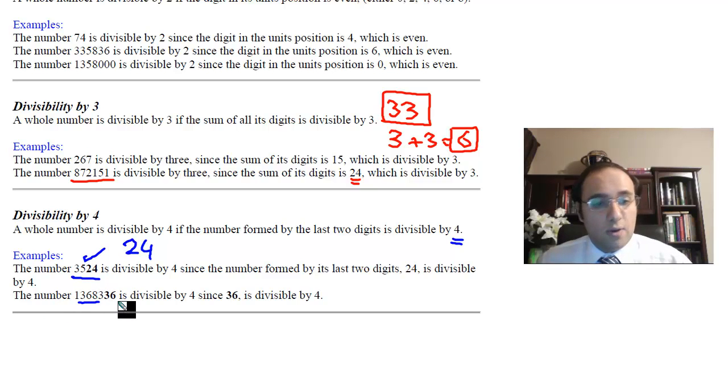Let's take a look at another one right here. We have this very long number, 1,368,336. It is divisible by 4. Why? Because the last two digits form the number 36, and 36 is divisible by 4. 4 times 9 equals 36. Therefore, this long number, 1,368,336, is divisible by 4.